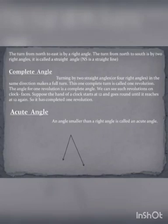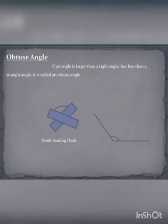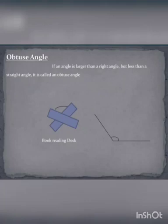An angle which is smaller than a right angle is called an acute angle. In other words, if the measure of an angle is above 0 degrees and below 90 degrees, such angles are called acute angles. An obtuse angle is greater than a right angle but less than a straight angle. If the measure of an angle is greater than 90 degrees and less than 180 degrees, it is called an obtuse angle.